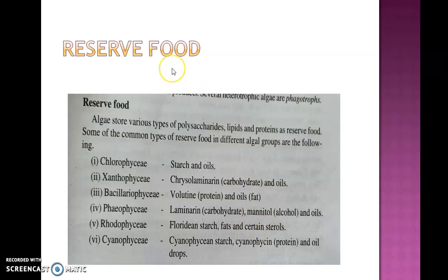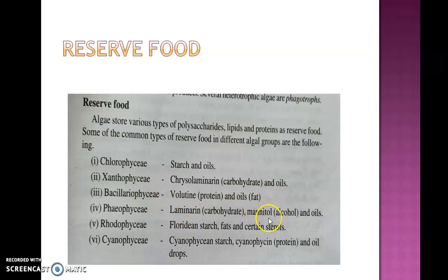The third parameter is reserve food materials. Algae are photosynthetic and prepare food by themselves. Reserved food materials include: starch and oil in chlorophyceae; chrysolaminarin and oil in xanthophyceae; oil and laminarin in bacillariophyceae; laminarin and mannitol in phaeophyceae; floridian starch, fats and sterols in rhodophyceae; and cyanophycean starch and oil drops in cyanophyceae (blue-green algae).